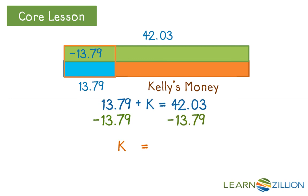Now we subtract from both sides, so we take $42.03 and we subtract $13.79 to leave us with $28.24. This is what Kelly's money should be. By subtracting both sides, we are performing the inverse operation, because originally we were adding, so the inverse would be subtracting.